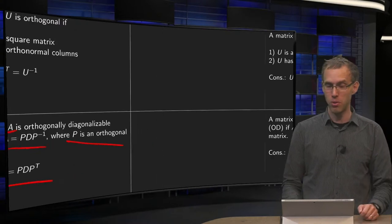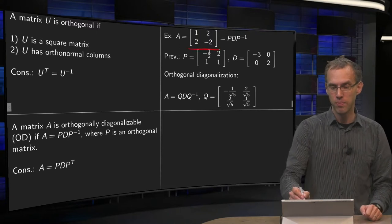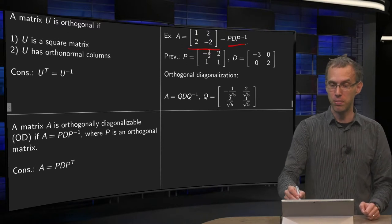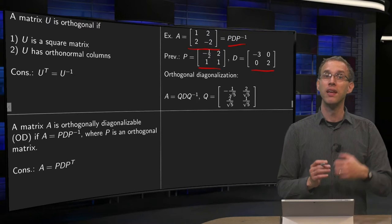So, can you do this at all? Well, in a previous video we saw the following example. We had this A, 1 2 2 minus 2, this is a symmetric matrix A, which is equal to PDP inverse, where we had the D over here and the P over there.